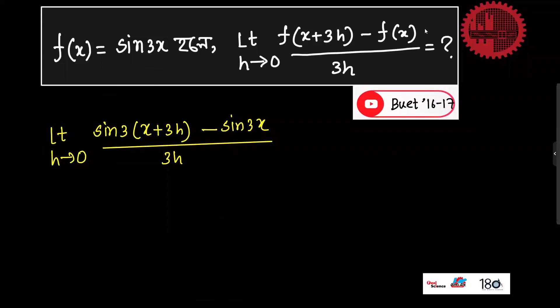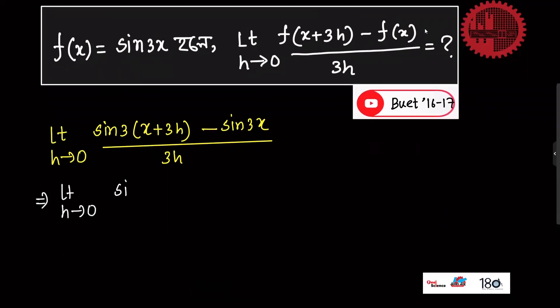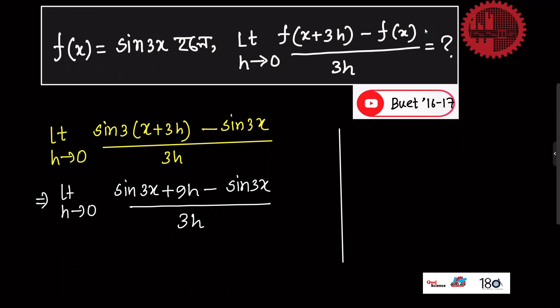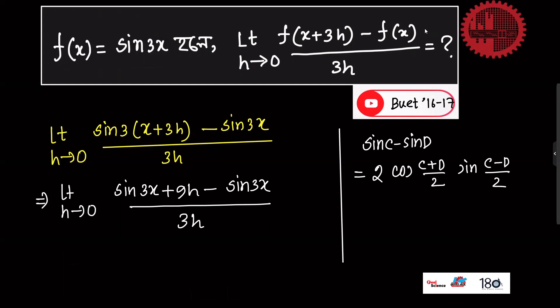Now, if you want to do this, limit h tends to 0 of sin 3x plus 9h minus sin 3x divided by 3h. We already know the formula. The formula says sin C minus sin D equals 2 cos of C plus D divided by 2, times sin of C minus D divided by 2.